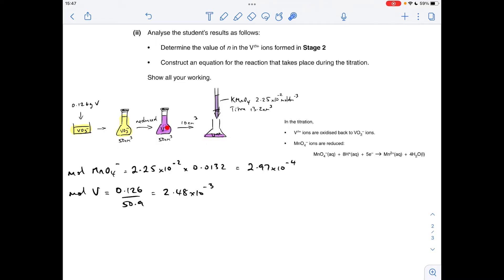The moles of Vⁿ⁺ that were generated from the reduction of these is the same. Here's the catch. Only a fifth were used in the titration. So that's coming out at 4.95 times 10 to the minus 4.